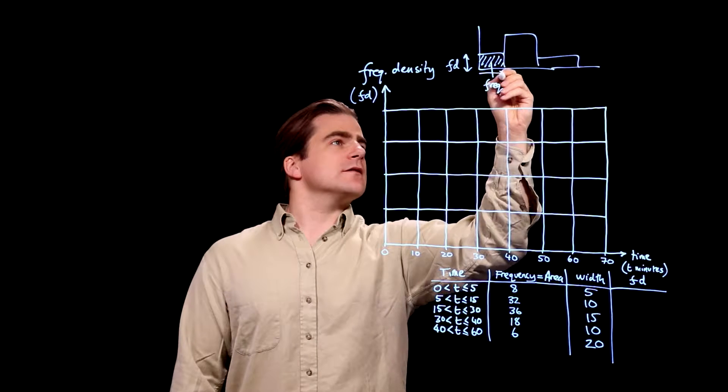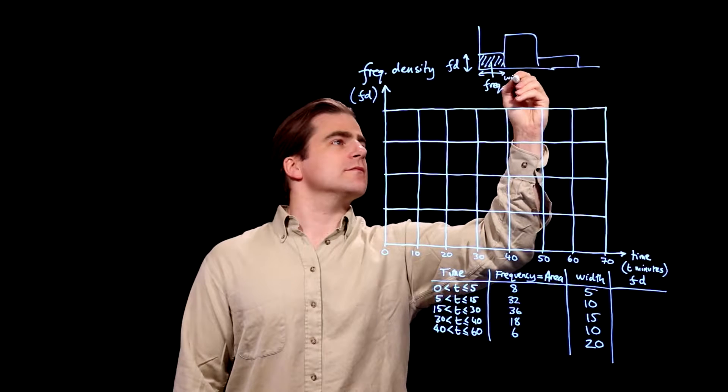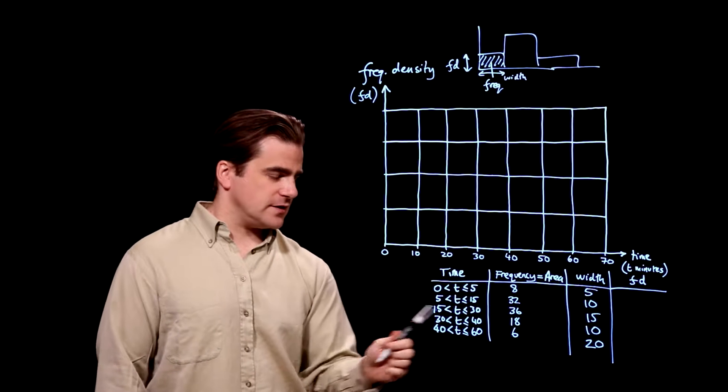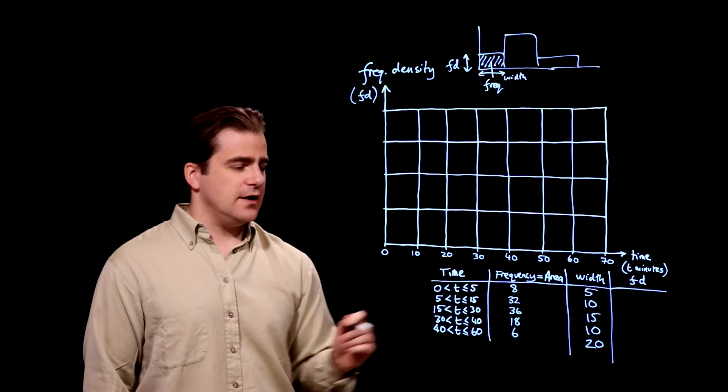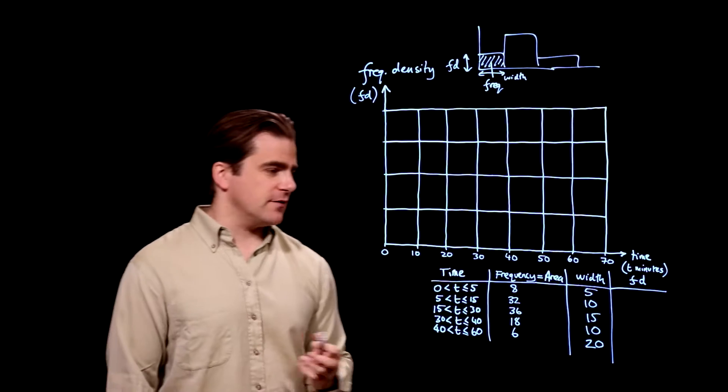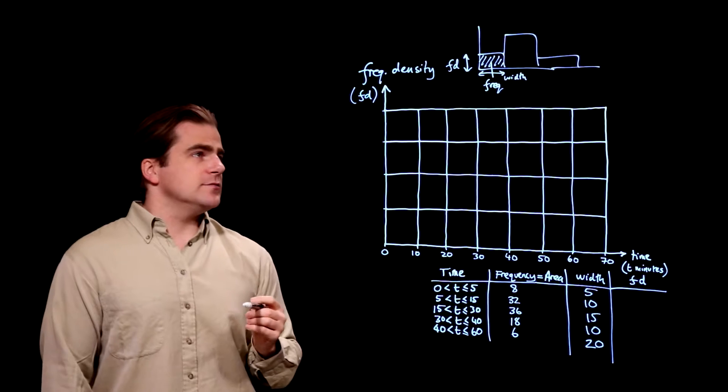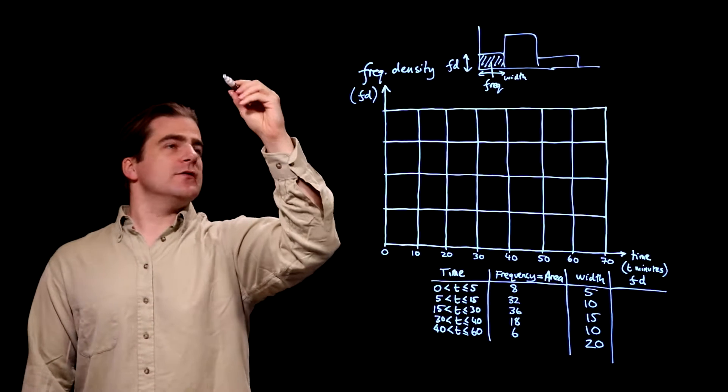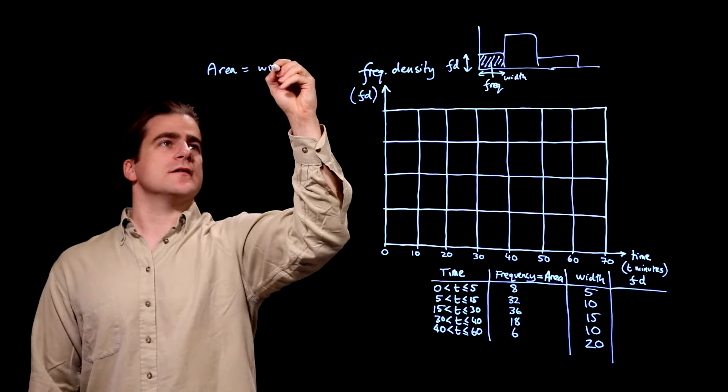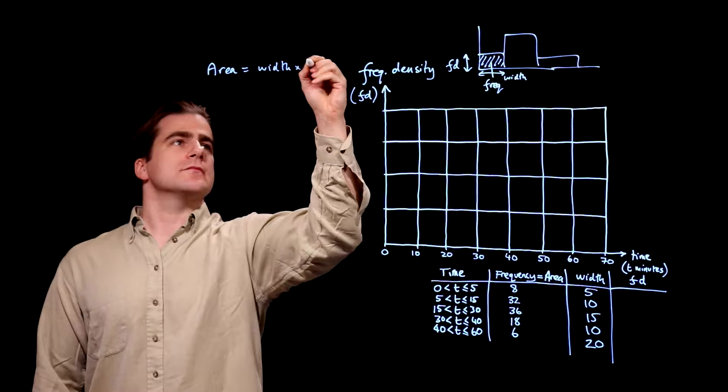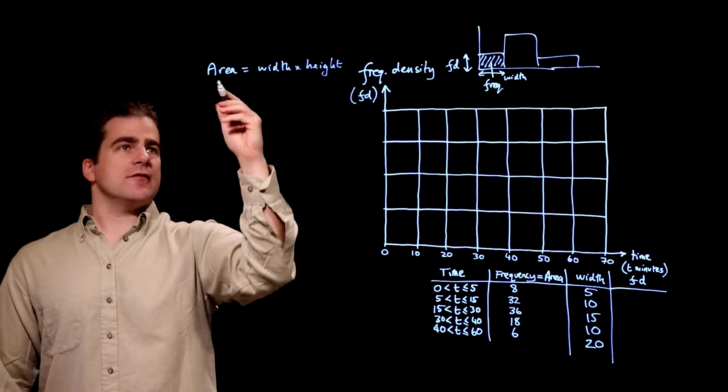And the width is the width of each of our sections, each of our five things. So this is a rectangle. So the area of a rectangle is width times height. We've agreed that the area is the frequency.